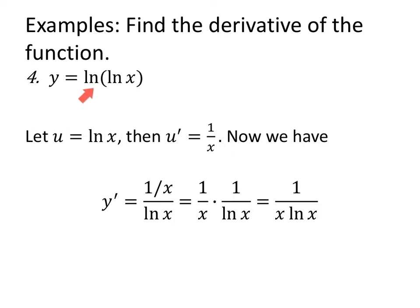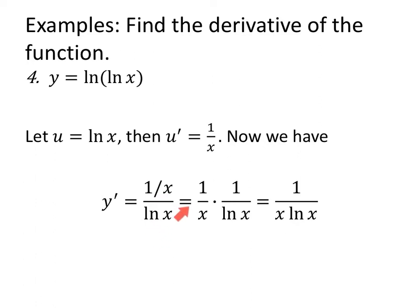What if Y equals the natural log of the natural log of X? U is the inside, natural log of X, whose derivative is 1 over X. So the derivative of Y is the derivative of the inside, 1 over X, divided by the inside, natural log of X. We can rewrite this as 1 over X times 1 over natural log of X, since dividing by natural log of X is the same as multiplying by its reciprocal, simplifying to 1 over X natural log of X.